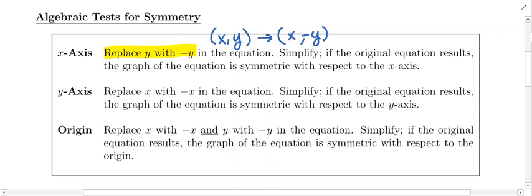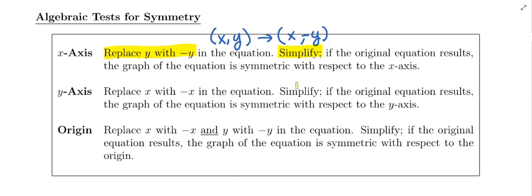That's why in your equation you will replace y with -y and then simplify. If the original equation results, then the graph of the equation has x-axis symmetry. If you don't get the original equation back, then the graph does not have x-axis symmetry. That's how it works.